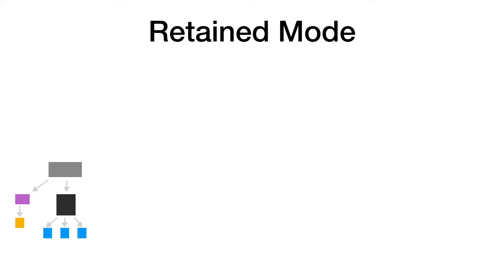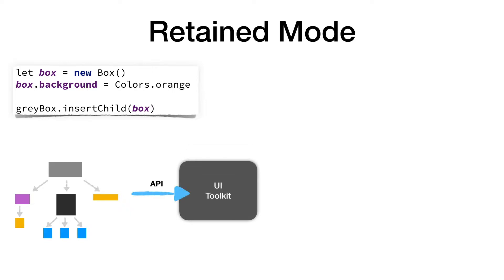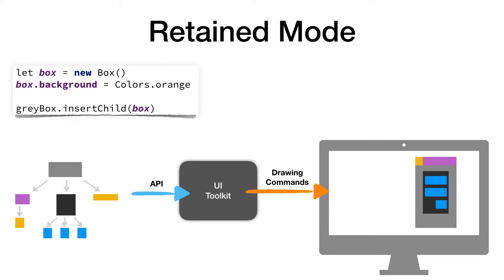Let's say I want to create an orange box inside a gray box. The way I would do it is by creating an instance of a new box class, setting its background, and adding it as a child of the gray box. With these calls, it updates the object model by adding the orange box, and then the UI toolkit translates this object model into a set of drawing commands that results in the graphics on the screen. This object-model-based approach makes Retained mode very data-driven and declarative in nature. Rather than concerning yourself with the mechanics of how things should be drawn, you focus on creating a high-level structure — the what rather than the how.